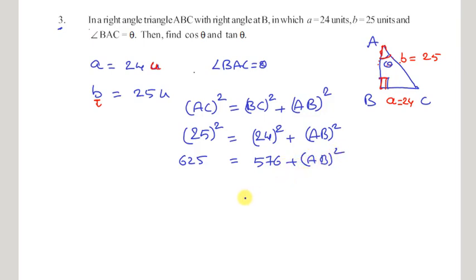To find AB squared, we need to transpose this 576 to the other side of the equation, so that it becomes 625 minus 576, that is 49, equals AB squared. AB equals square root of 49, that is 7. So we got the value of AB.